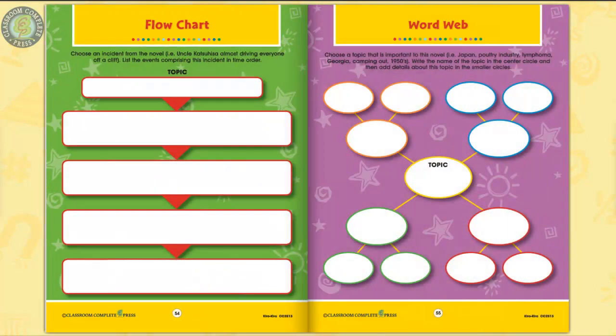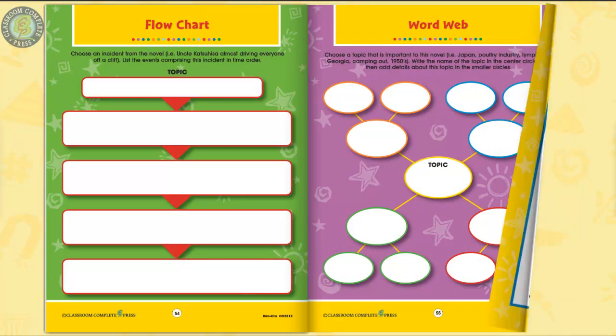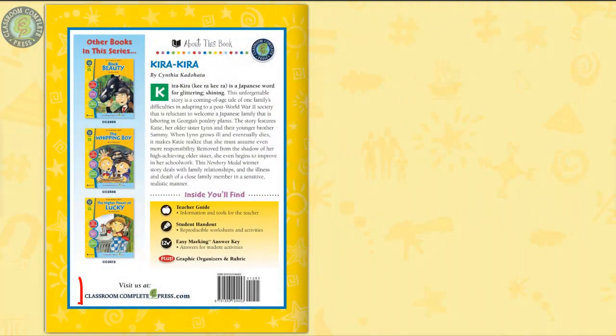List the events comprising an incident in the novel in the order that it happened in a flow chart. Visit our website to see more novel study guides just like it.